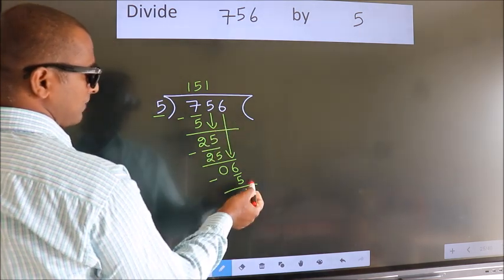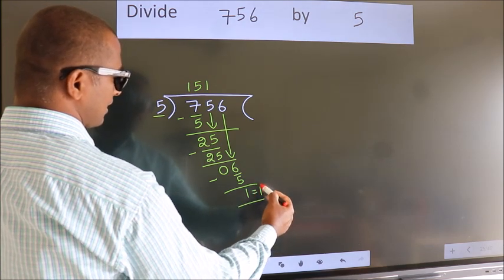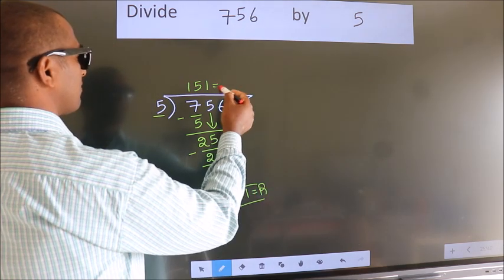No more numbers to bring it down. So, we stop here. This is our remainder. This is our quotient.